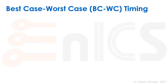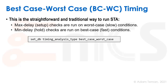Let's start with the basic approach known as BCWC, or best case worst case timing. This is a straightforward and traditional way to run STA. Max delay setup checks are run on worst case conditions — the slow conditions. We take SS for the process, a low voltage like 0.9 VDD, and a worst case temperature like 125°C, though with temperature inversion it can be low temperature such as 0° or -40°. Min delay hold checks are run on best case fast conditions: FF, 1.1 VDD, and 0° or -40°. With temperature inversion, it'll be higher voltage and higher temperatures like 85° or 125°. In Cadence, you set this with the DB parameter timing_analysis_type best_case_worst_case.